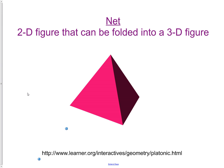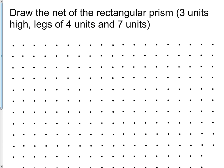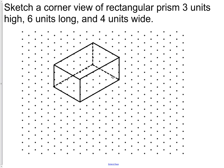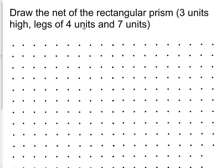So that's a net. It's a 2D figure that can be folded into a 3D figure. We'll see in a little bit why nets are really useful for what we're studying here. Here we go. We want to draw the net of the rectangular prism, three units high, legs of four and seven. I jumped back here to show you this is a bit what that shape would look like. Here's your rectangular prism. Now we're actually going to try and draw the net of that same prism.